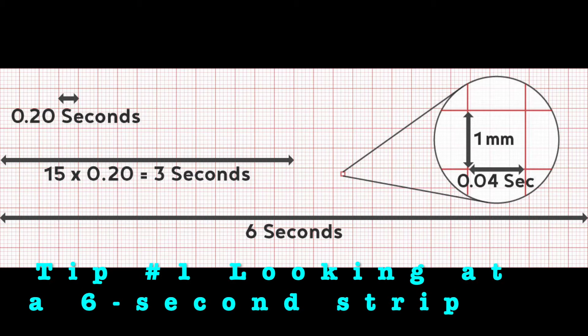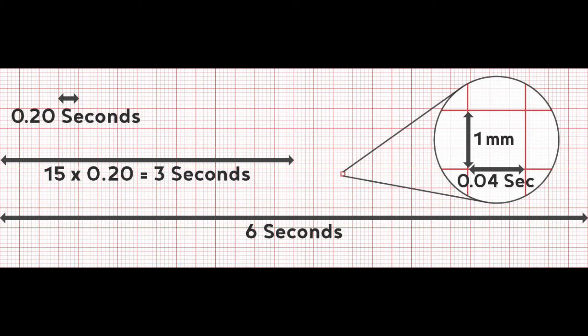First things first, you want to make sure you're looking at a 6-second strip. You can determine that you have a 6-second strip by the number of big boxes. If you look closely at the image, one big box contains 5 smaller boxes. Each small box is equivalent to 0.04 seconds. Therefore, if you multiply one small box by 5, a big box is equivalent to 0.20 seconds.